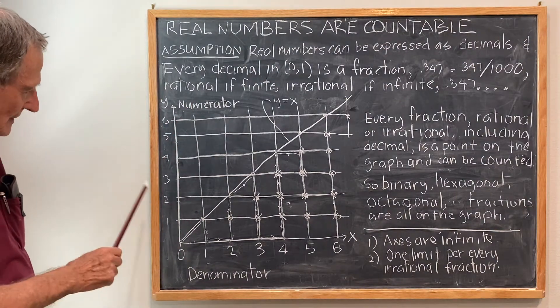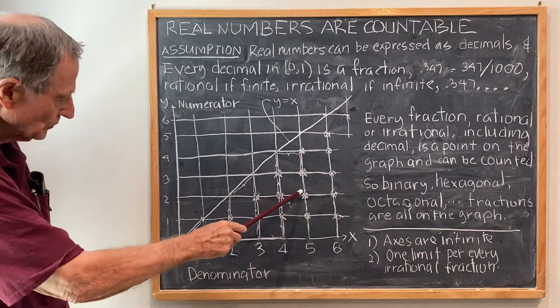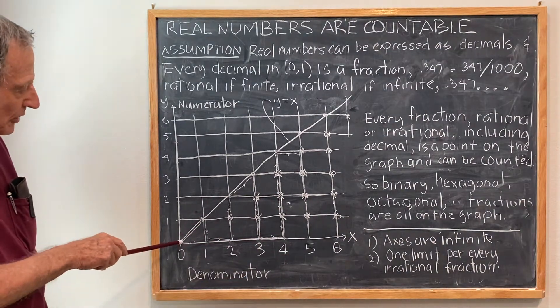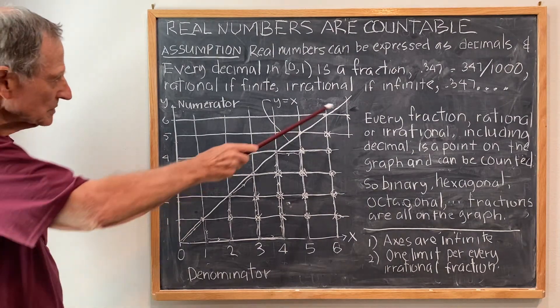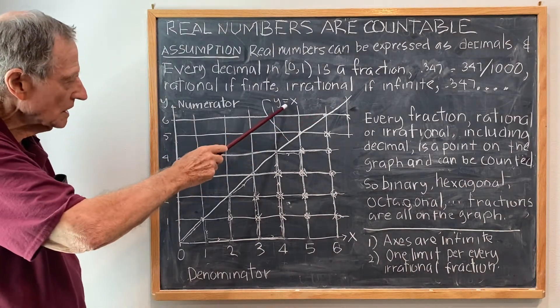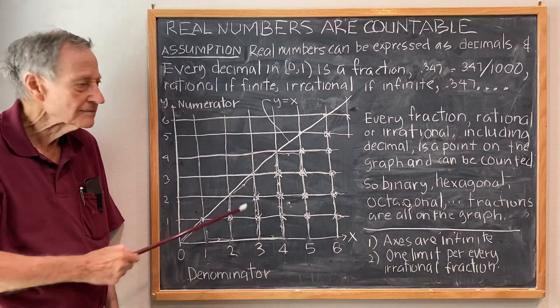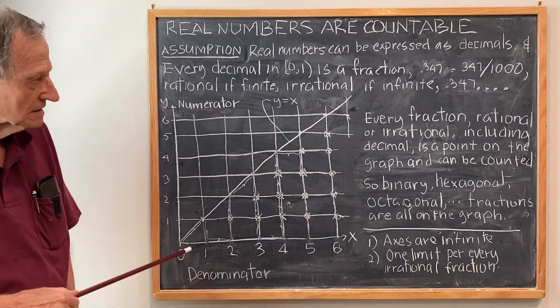So, for example, this point here is 2 fifths. Now, every point on this graph is on or below the line y equal x and I can systematically count every point on the graph.